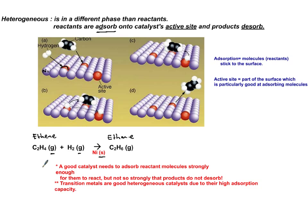A good catalyst should have some affinity — but not very strong affinity — for the reactants to come and get adsorbed onto it. But it should not be so strong that the product cannot desorb. That's how we pick and choose a heterogeneous catalyst.